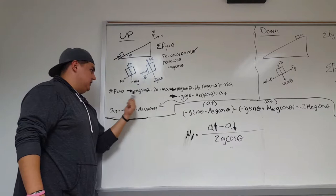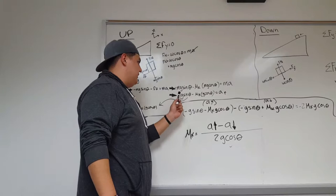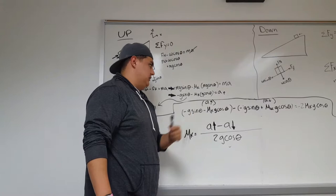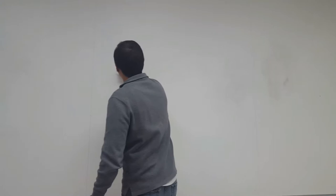We then solve for our sum forces at x, which is equal to zero, so it's negative Mg sine theta minus friction force is equal to Ma. We noticed that the mass was throughout the equation, so we went ahead and took it out. So it's negative G sine theta minus Uk g cosine theta equal to A up. And it gives us our final equation of negative G sine theta minus Uk g cosine theta.